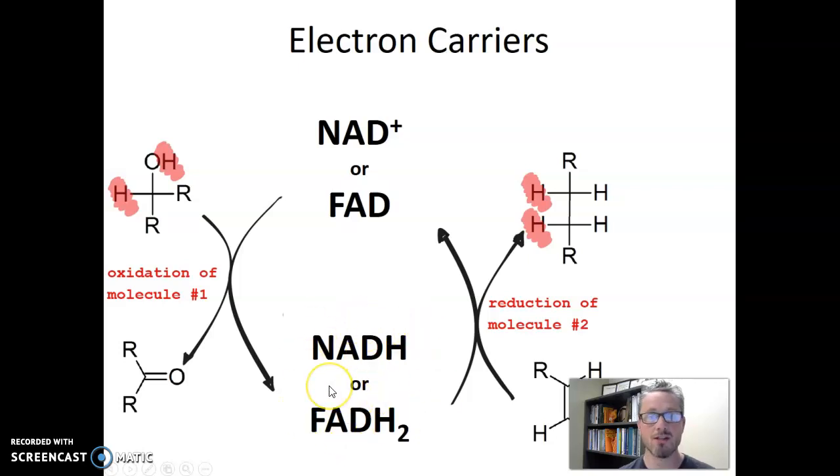So now these molecules can just take those electrons somewhere else in the cell and drop them off. Here, these electron carriers are going to drop the electrons off onto another molecule. Here's a molecule that is lacking some electrons. So we're going to give away these hydrogens and their electrons to these molecules. And now this molecule has more electrons and we get back our low energy electron carrier that can be reused in that process over and over.